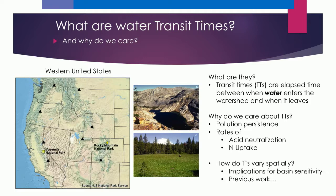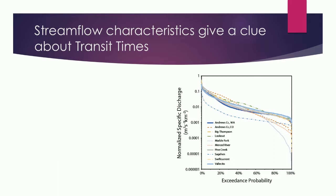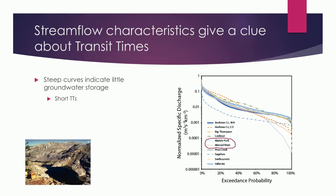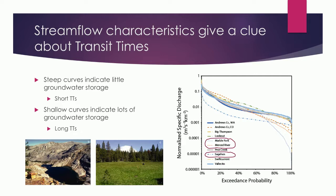Our study involved 11 watersheds — all relatively pristine headwater catchments without water diversions, mostly snowmelt-driven. Here's a flow duration curve with specific discharge on the y-axis and exceedance probability on the x-axis. The important thing is the shape of the curve. When you have steep curves, as for the Marble Fork and Merced River, we hypothesize those catchments have short transit times. Where curves are more shallow, like for Sagehen Creek, there would be longer transit times.